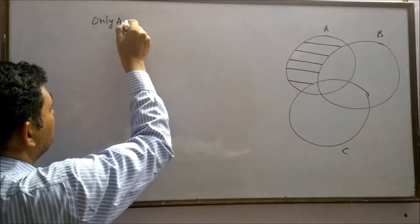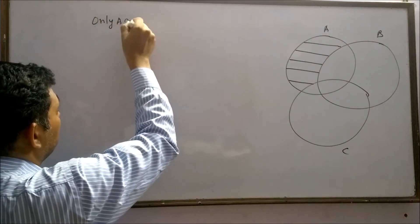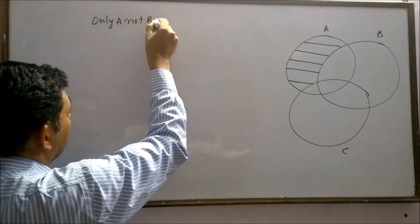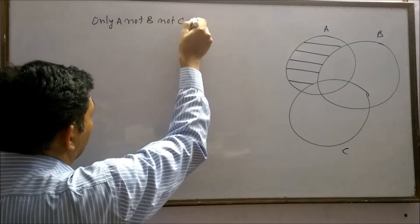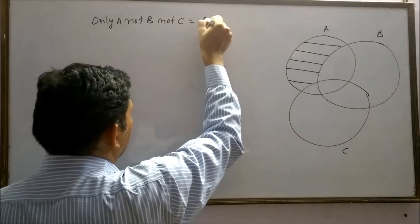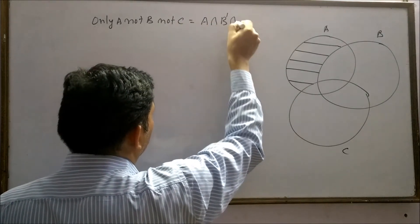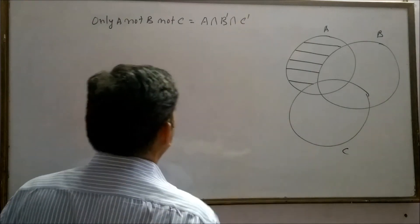Only A means Not B and Not C, which can be represented as A intersection B complement, intersection C complement.